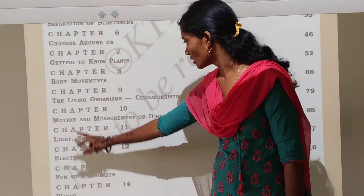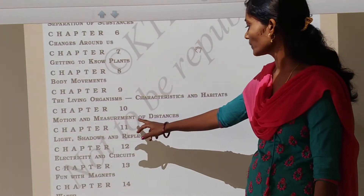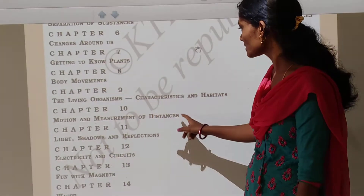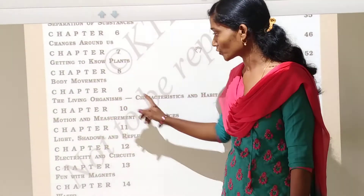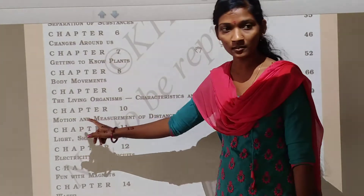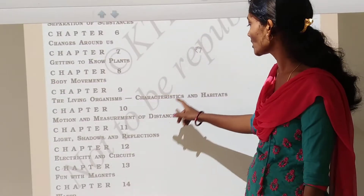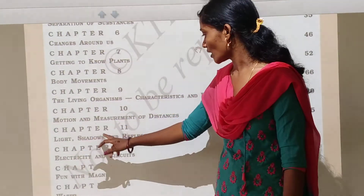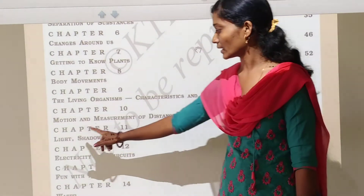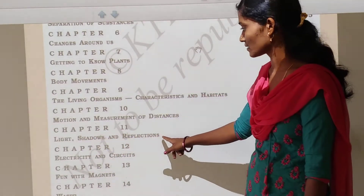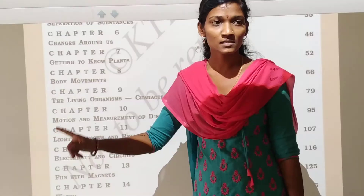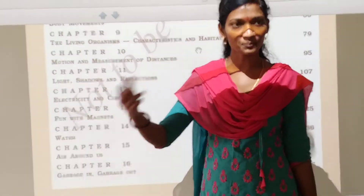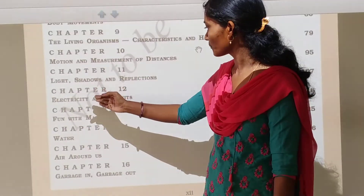Next, chapter number 10: Motion and measurement of distance. In this lesson we study about the types of motion, measurement of temperature and distance. Next, chapter number 11: Light, shadows and reflections. In this lesson we study about light, beam, bulb, shadows and reflections.